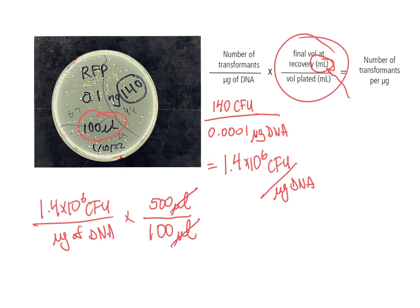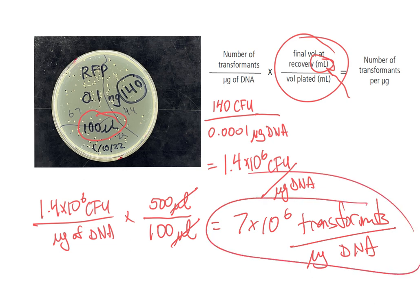If you, let's say, plated or had a recovery volume of two milliliters but then you plated 300 microliters, then at that point you would need to convert into milli to micro or micro to milli, whatever, as long as they're the same. Then you do the math there, and you should get seven times 10 to the sixth transformants per microgram of DNA.